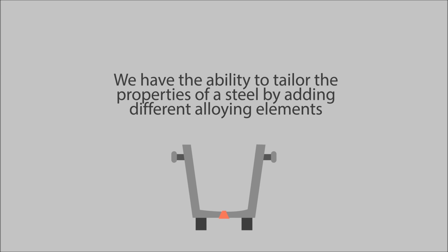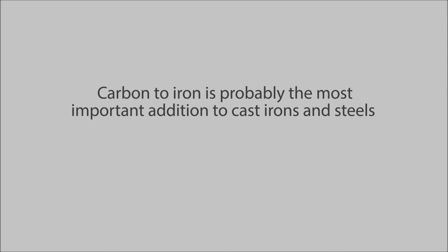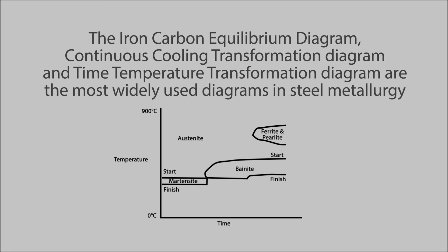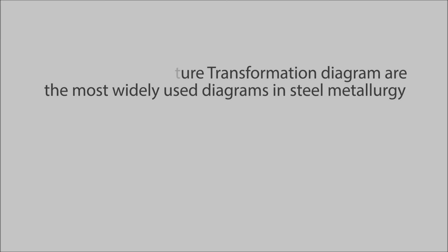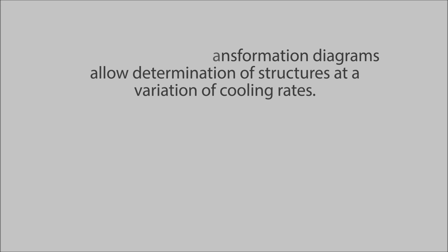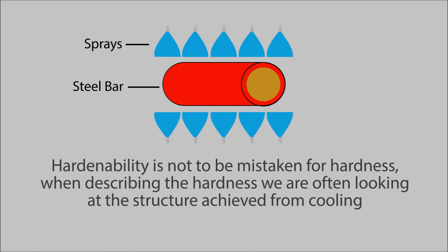In summary: we have the ability to tailor the properties of steel by adding different alloying elements. Alloying elements do not always work in isolation — sometimes they cause a multiplication effect. Carbon to iron is probably the most important addition in cast irons and steels. The iron-carbon equilibrium diagram, continuous cooling transformation diagram, and time-temperature transformation diagram are the most widely used diagrams in steel metallurgy. CCT and TTT diagrams allow determination of structures at a variety of cooling rates. Hardenability describes how deep into the steel we can achieve hardening, and is not to be mistaken for hardness.